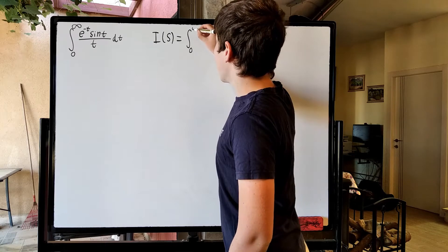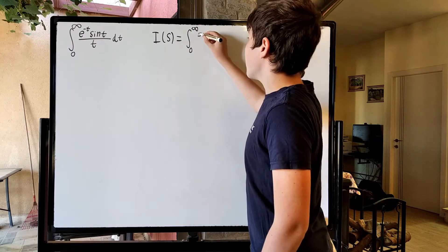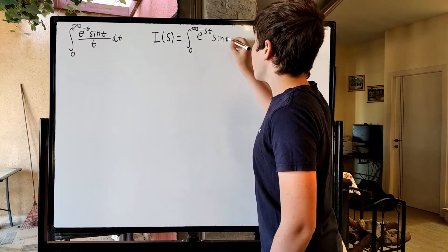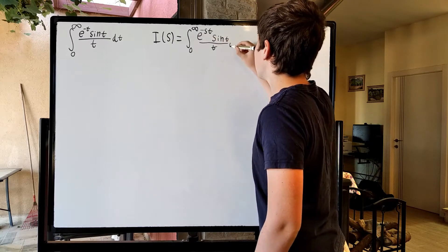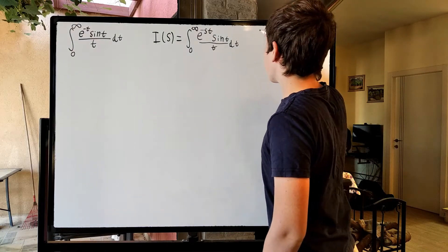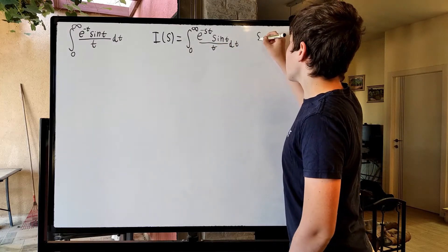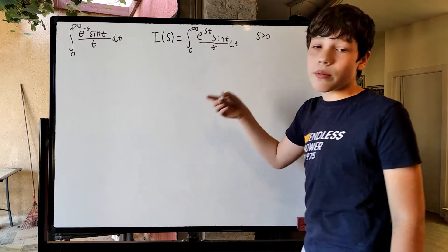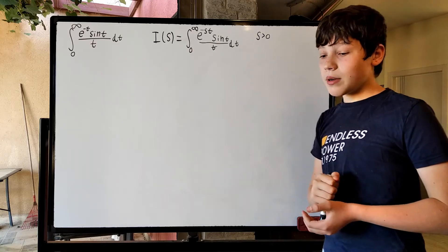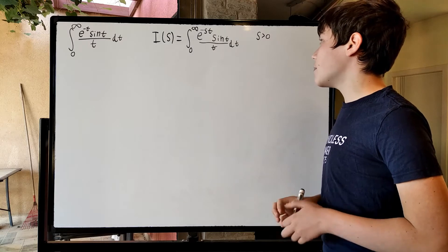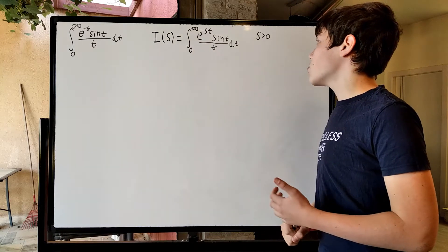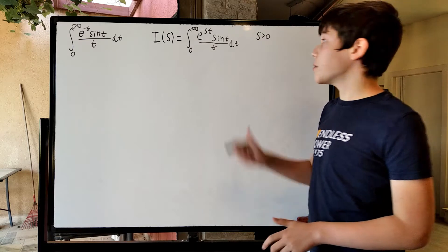We're going to define I of s as the integral from 0 to infinity of e to the negative s times t, times sine t, divided by t, dt. It's going to be important that we define this such that s is bigger than 0, otherwise we're going to run into some problems. We can define our function however we want, and it won't be a problem, because to get the original integral we just have to plug in s equal to 1. And last time I checked, 1 is bigger than 0, so this is fine to do.